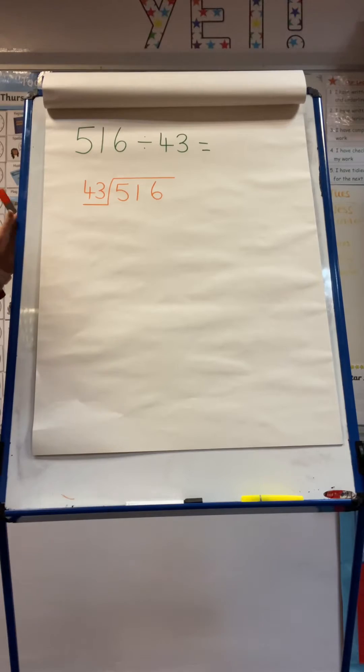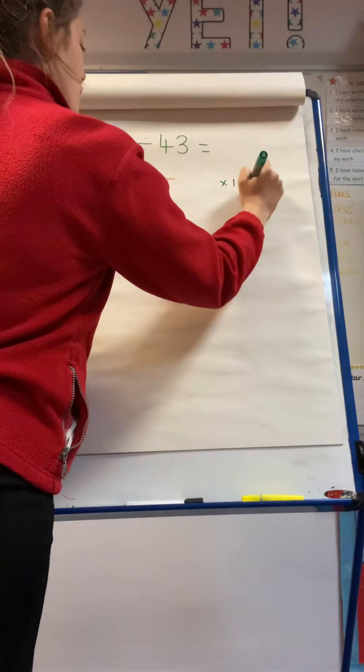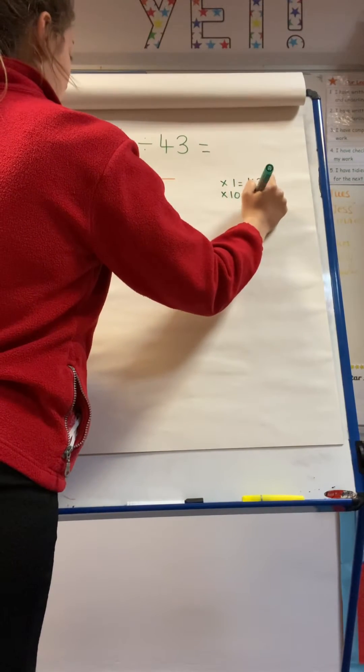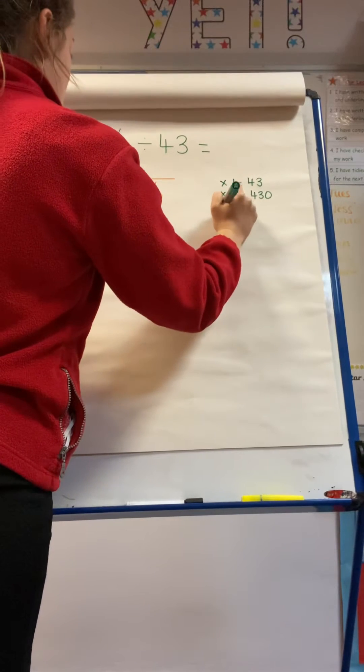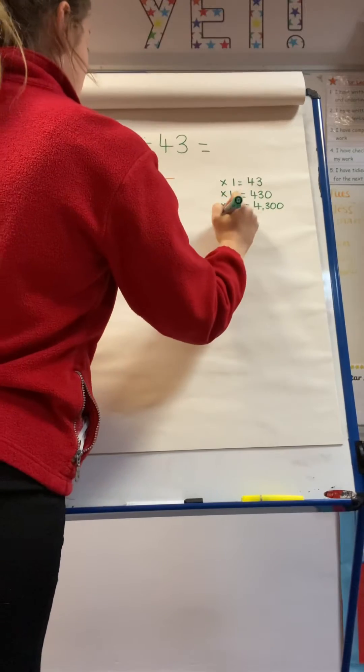Now I'm going to write out my magic seven. So times 1, 43 times 1 is 43. Times 10, 430. Times 100, 4,300.